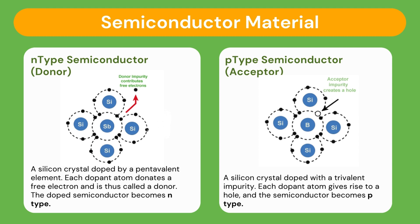P-type is a silicon crystal that is doped with a trivalent impurity or element, meaning that by diffusion or by implantation, we are introducing a trivalent element that has three electrons in its valence shell. Therefore, this dopant atom of the trivalent element gives rise to a hole. An example of a pentavalent element is antimony, and an example of a trivalent element is boron.